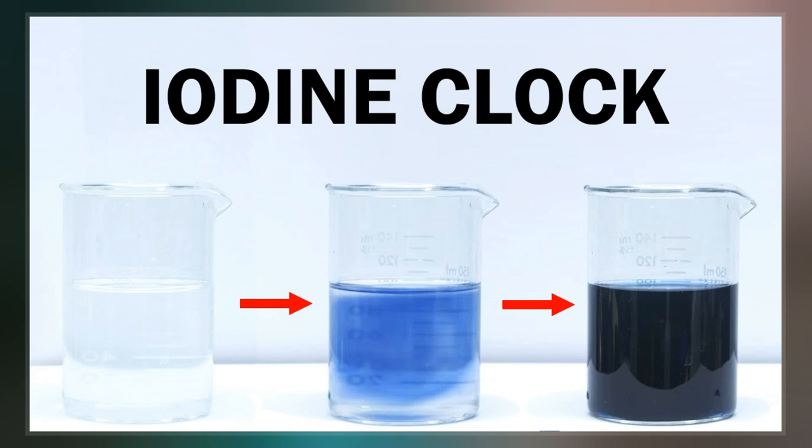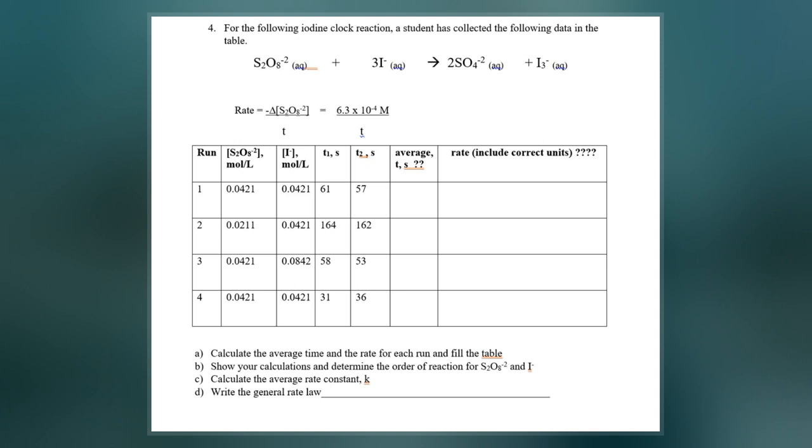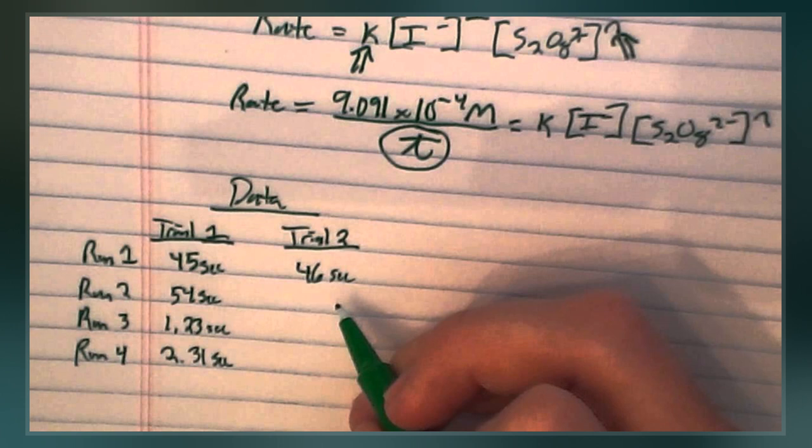There are two reactions occurring simultaneously in the solution. In the first, slow reaction, iodine is produced. In the second, fast reaction, iodine is reconverted to two iodide ions by the thiosulfate.